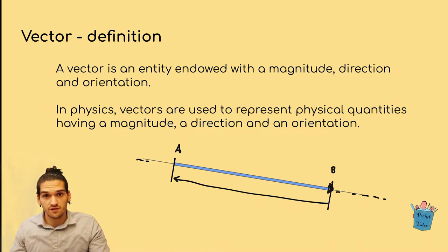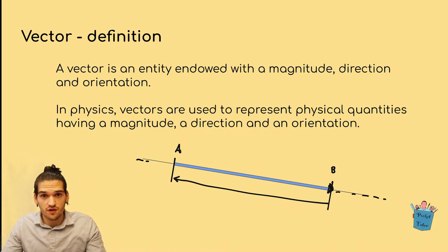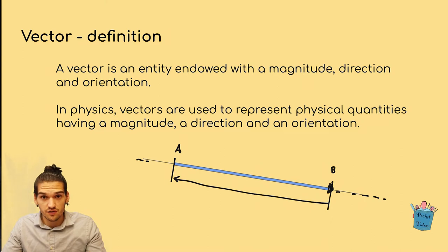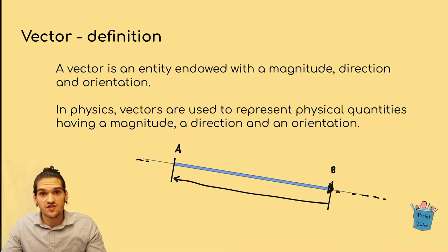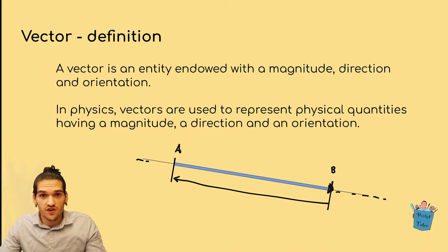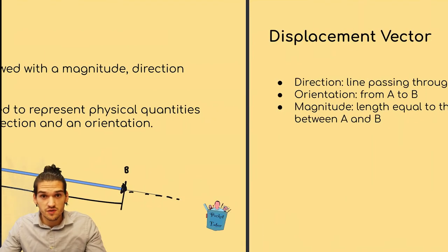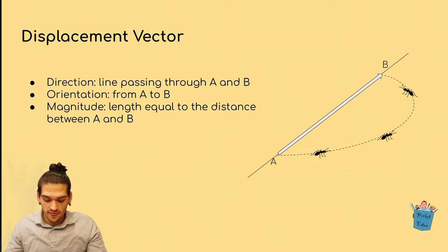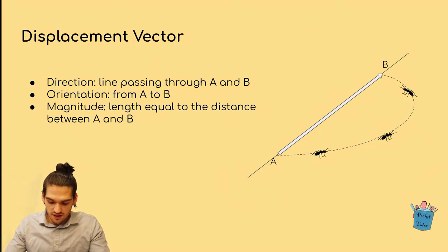In physics we have many different examples of vectors. Every physical quantity having a direction, an orientation, and a magnitude — meaning an intensity — is described by a vector. For example, we can have acceleration, speed, force, or displacement.